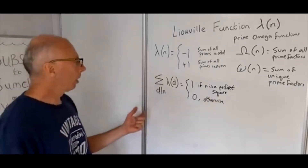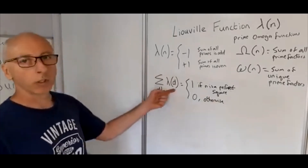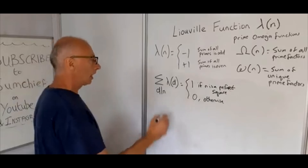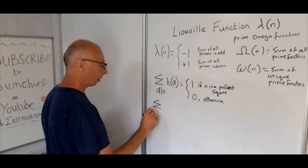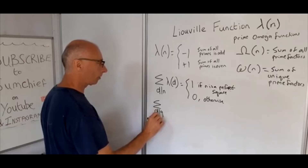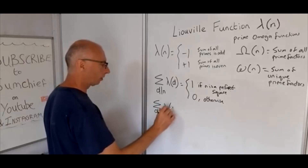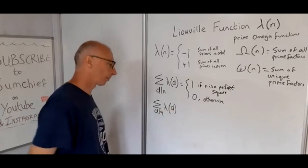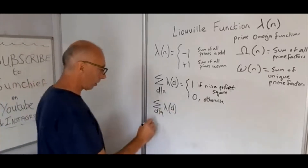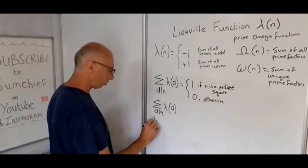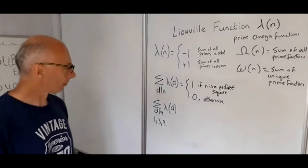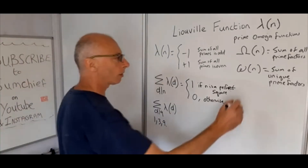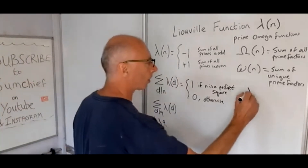Let's look at one number as an example. We'll take the number 9, so we're going to sum up all the divisors of 9 and the Liouville function for those divisors. The divisors of 9 are 1, 3, and 9.